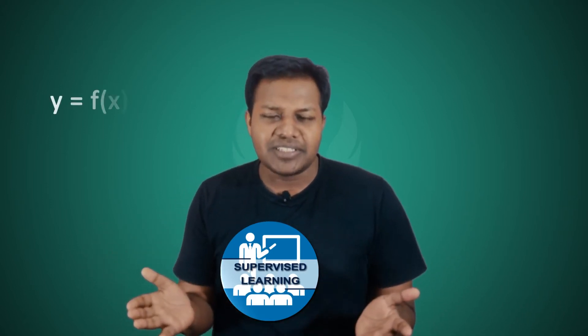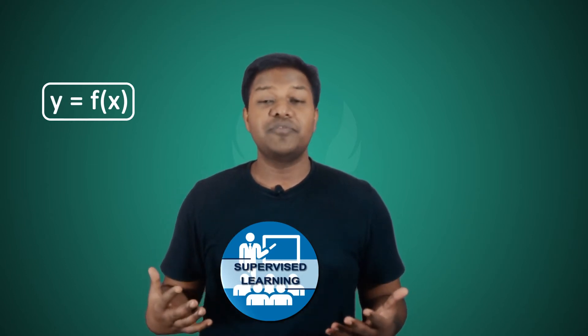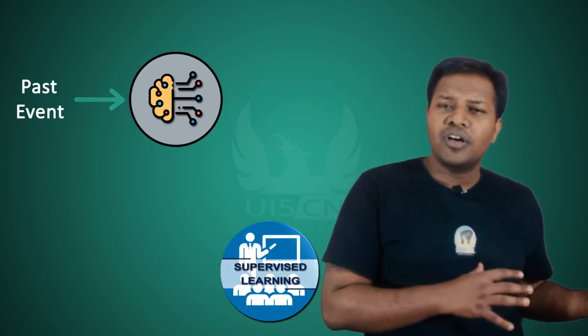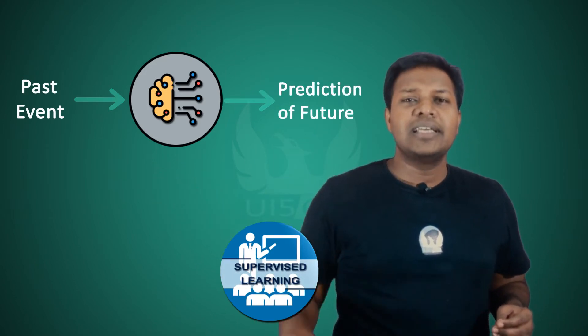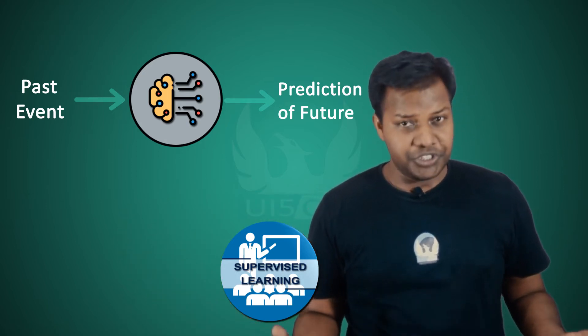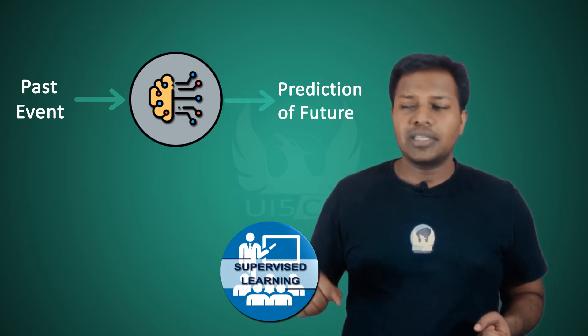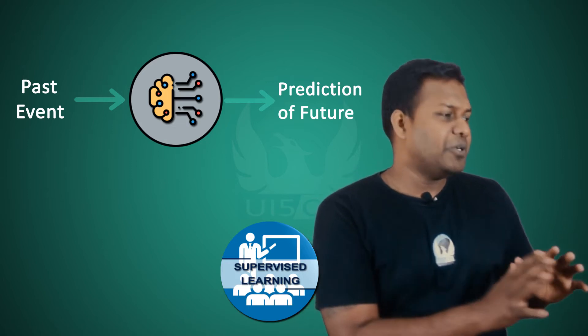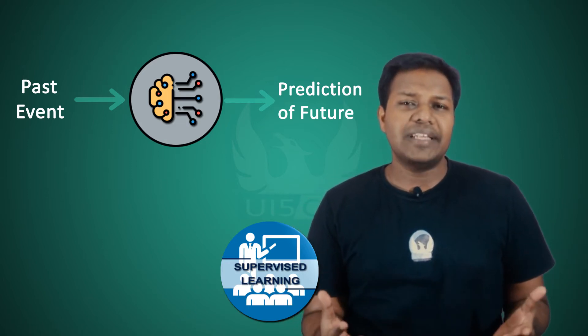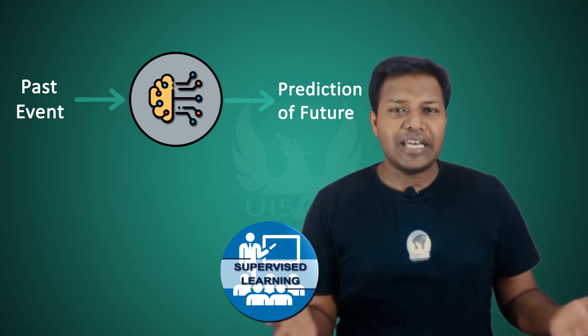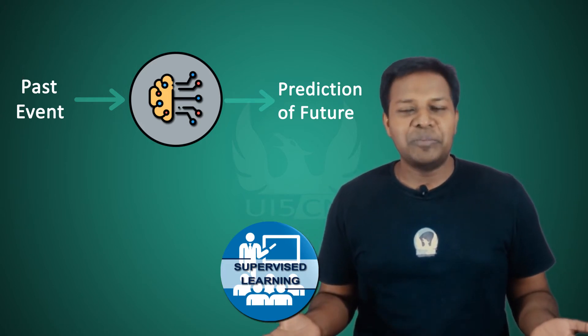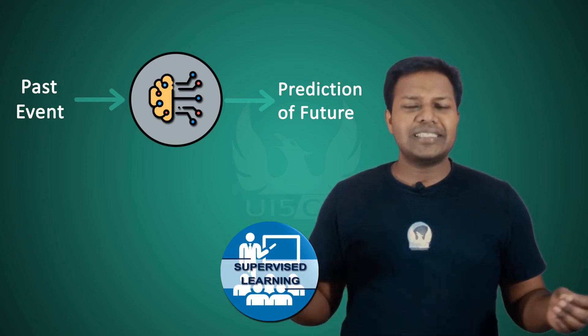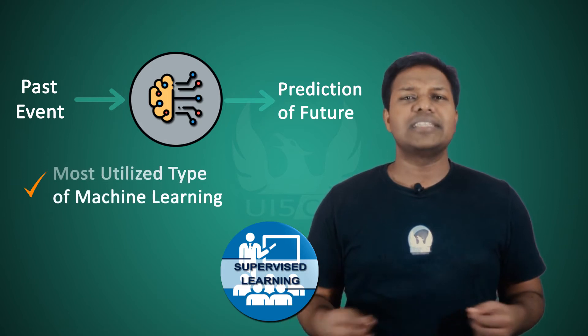In supervised learning, we create a simple function that is trained with a dataset we already know. For example, if I have events that occurred in the past, I can feed those past events to the machine and tell it to learn from this data. Whenever it encounters something in the future similar to past experience, it tells me what the output is going to be — because as a human I have limited capability.